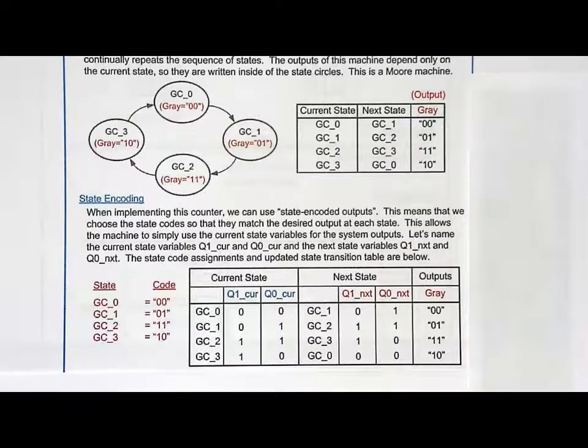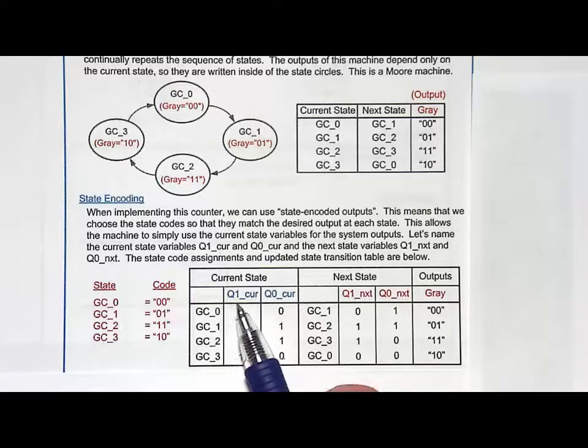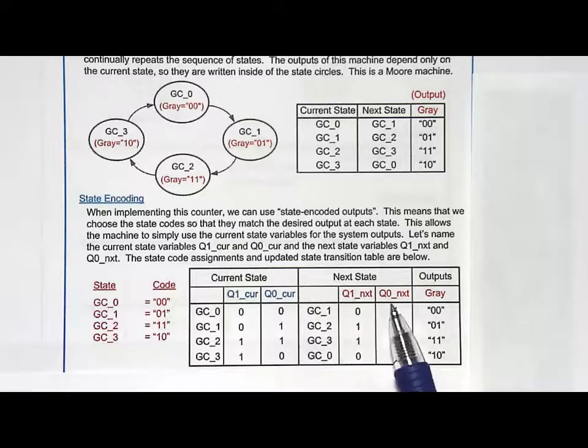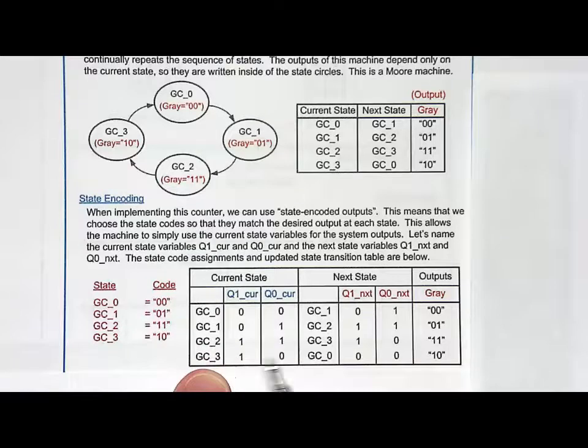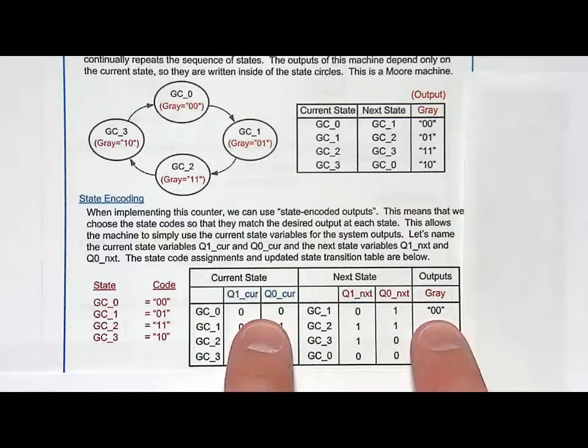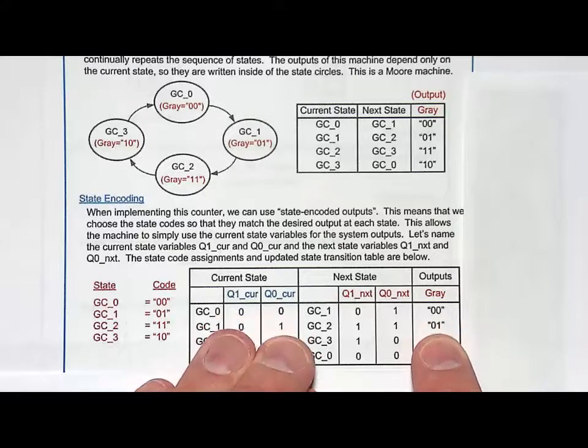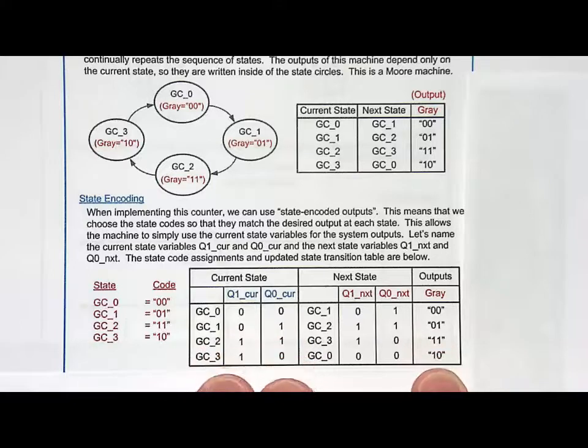And then when we go to do our outputs, we are going to have our outputs match this current state. And that's intentional because we're doing state encoded outputs. So when I come in here, I'm going to name my state variables q1cur and q0cur again. q1next and q0next are the names of my next state variables. And I put in these things. So I put 00 is GC0, 01 is GC1, 11 is GC2, and 10 is GC3. Look at the outputs compared to the current state. It's 00 and 00, then 01 and 01, 11 is 11, and then 10 and 10. So my outputs do match the current state. So they are state encoded outputs. And that's going to allow my output logic synthesis to be very simple.